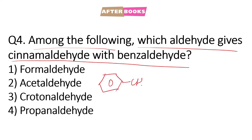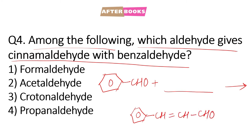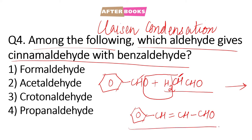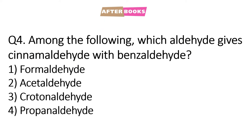Question number 4: among the following, which aldehyde gives cinnamaldehyde with benzaldehyde? Benzaldehyde, that is C6H5CHO, ko hum kisse treat karay ki hume cinnamaldehyde mile. This is a name reaction which is known as Claisen condensation. Yahan pe benzaldehyde ke saath agar hum acetaldehyde, that is CH3CHO, react karvayenge toh H2O will be removed aur CH=CH double bond ban jayega — cinnamaldehyde will be formed in the presence of NaOH. So we are reacting acetaldehyde with benzaldehyde, which is option number 2.